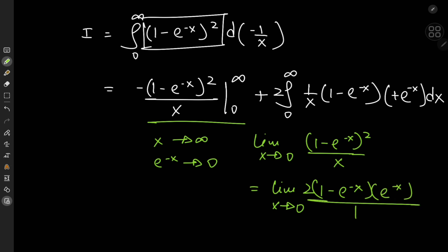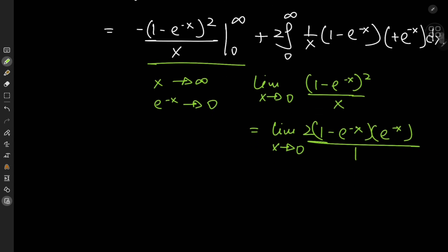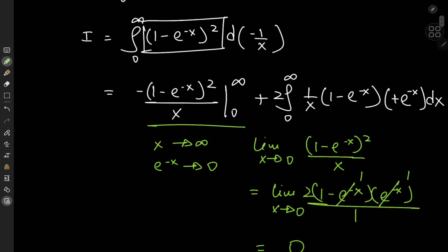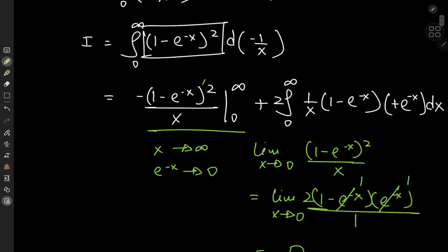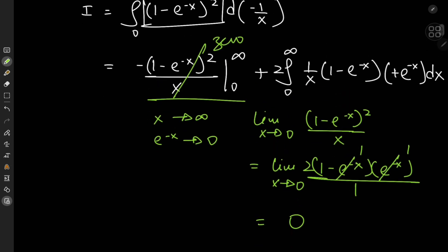Now as x approaches 0, this thing approaches 1 and this thing approaches 1 as well. So we have 1 minus 1, which is of course 0. And that's pretty convenient because the first term just crashes out to 0.